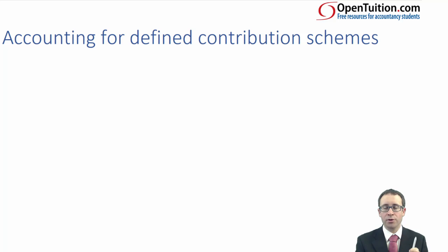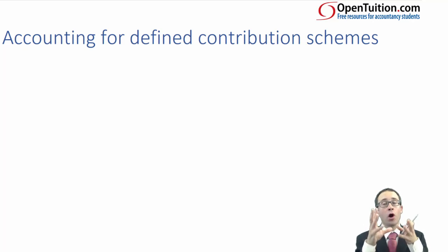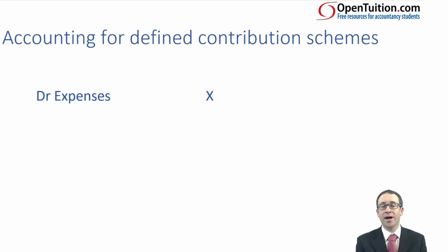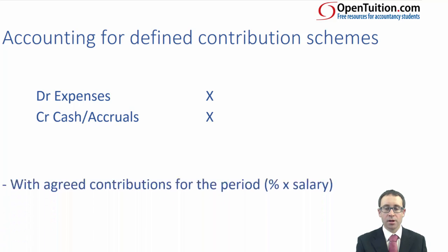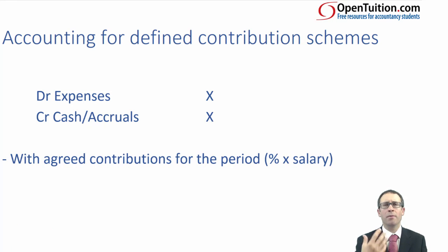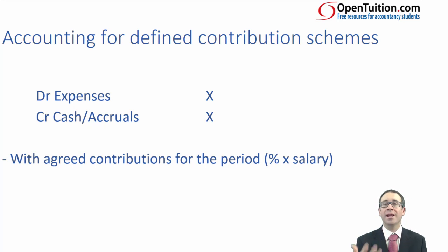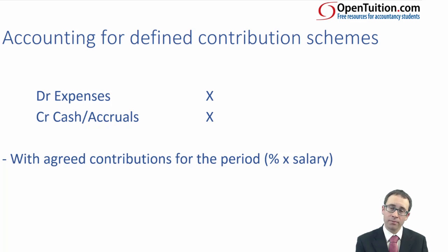That makes the accounting for the contribution very easy. All the company is going to do — remember, we're looking at what the company accounts for — is recognise an expense, so debit the expense, and credit their cash or credit their accruals. The amount they expense is the agreed contribution — a percentage of your monthly salary into your pension scheme, so it could be 5%. That's just too straightforward, so it's very unlikely to be seen in an exam question numerically.